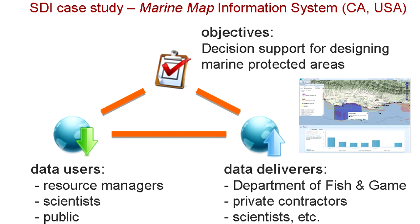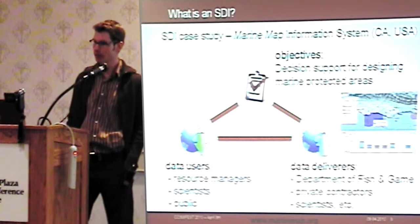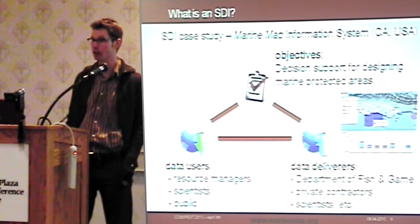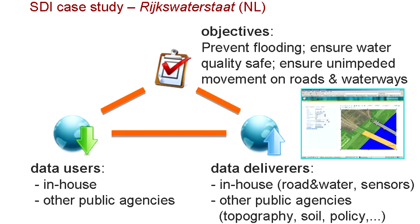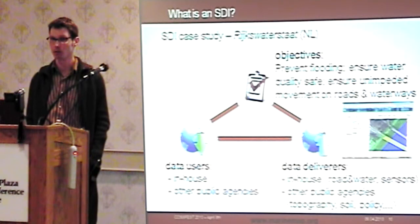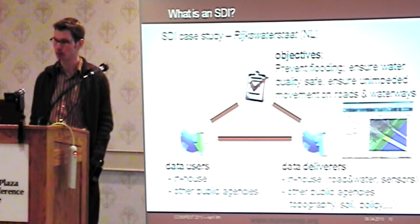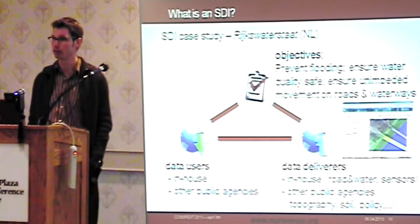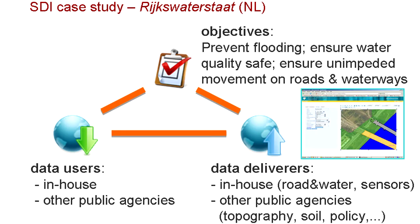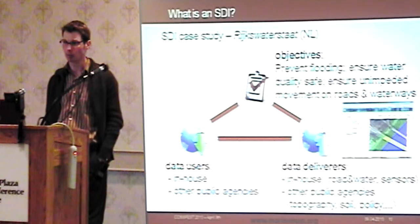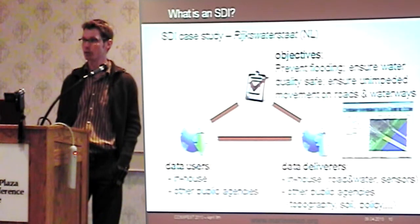The second example is the Marina Map Information System in California, USA. The objective was to provide a decision support system for designing marine protected areas. Data users include resource managers, scientists, and the public — people who just want to see what's going on in a certain coastal area. The third example is Riek Waterstad, a large organization of about 10,000 people whose task is to prevent flooding, ensure water quality and safety, and ensure unimpeded movement on roads and waterways. They map the infrastructure of the Netherlands from waters to roads, with data users both in-house and from other public agencies.